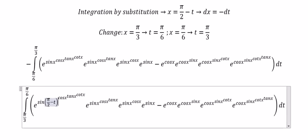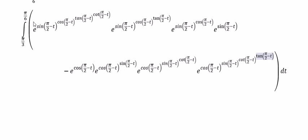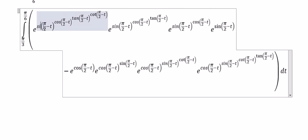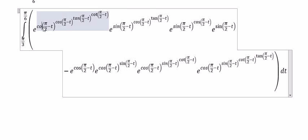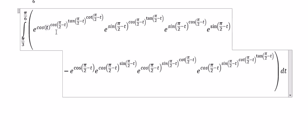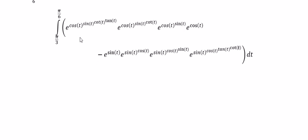Next we need to change π over 2 minus t in here, so we put this in and do the same process for everything. After we replace everything, we know that sine of π over 2 minus t equals cosine t.